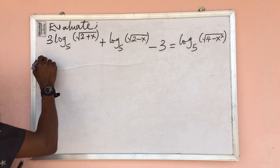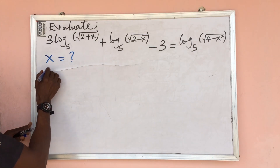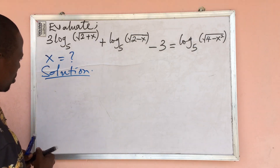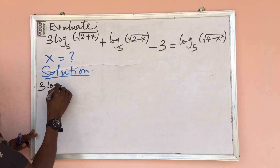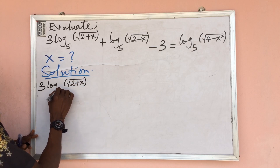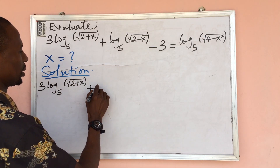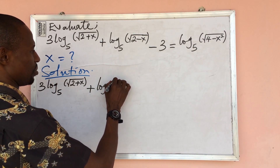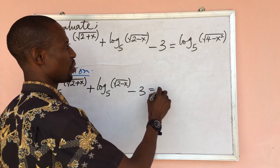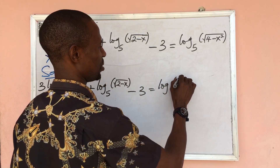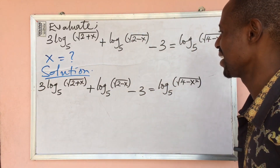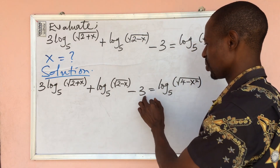So what would be the value of x? Let's take our solution from here. We put down our equation: 3 log base 5 of (root of 2 plus x), plus log base 5 of (root of 2 minus x), minus 3, equal to log base 5 of (root of 4 minus x squared). The first thing we do is introduce log base 5 to the 3 here.